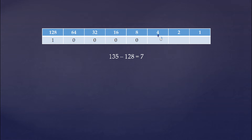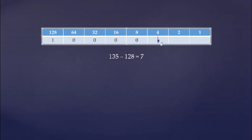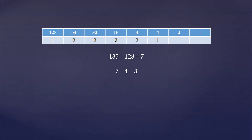Now we get to place value 4, which is less than or equal to 7. So we do the same thing we did at 128: we put a 1 there, and then we take the number 4, which is our place value, and subtract it from 7. That leaves us with a remainder of 3.